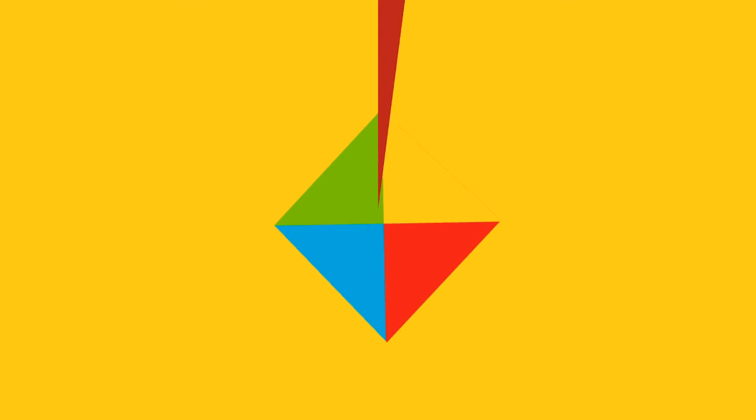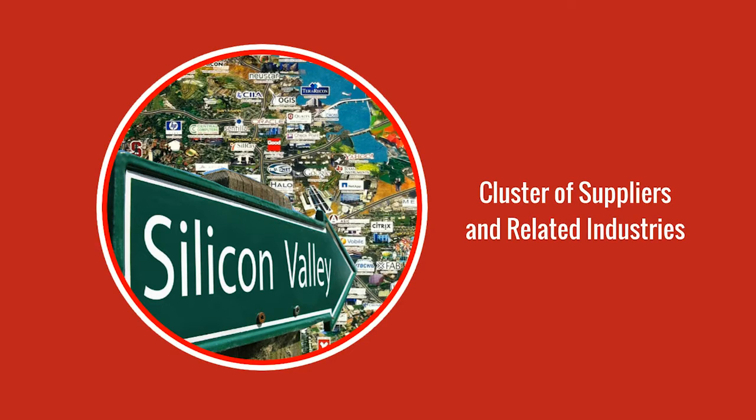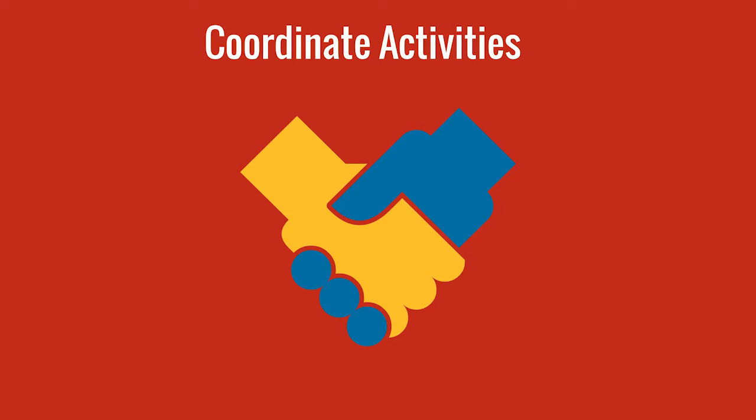The third element of the diamond model addresses the extent to which the nation possesses clusters of sophisticated supplier and related industries. Within these advanced clusters, firms can coordinate or share activities in the value chain, develop complementary products, and enjoy knowledge spillovers.